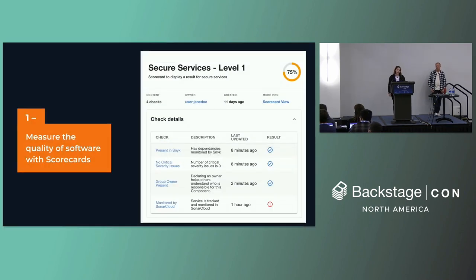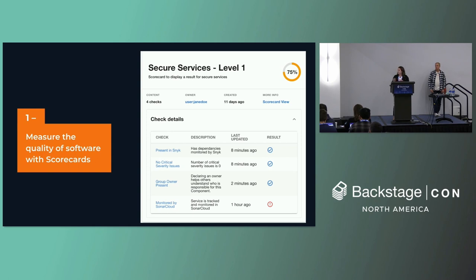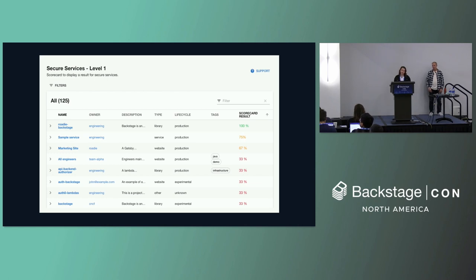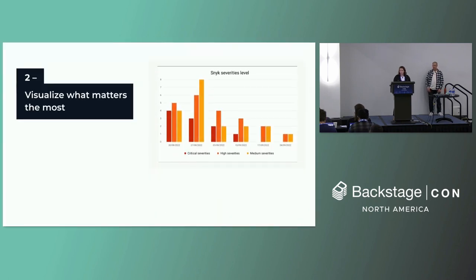First, we wanted to measure the quality of software. 'Quality' may not mean the same thing to all engineers, so by introducing scorecards we were able to reflect on the checks that matter most to us — for example, checks like presence in Snyk or number of critical severity vulnerabilities. Checks are a single unit of computation producing a result, and a scorecard is an accumulation of all those results, giving engineers a clear overview at entity or catalog level.